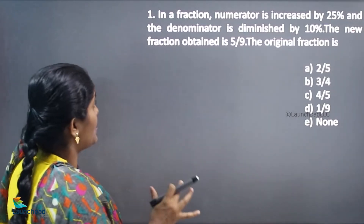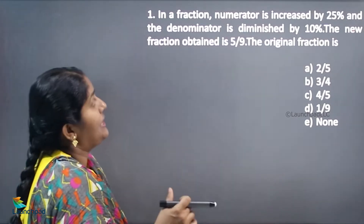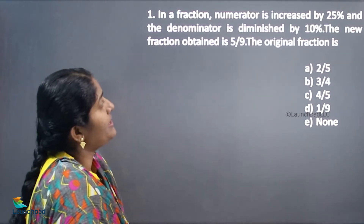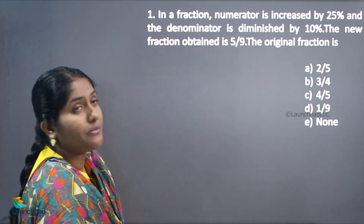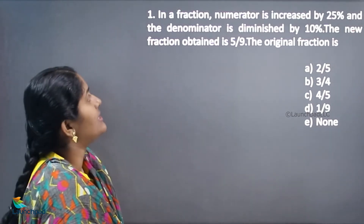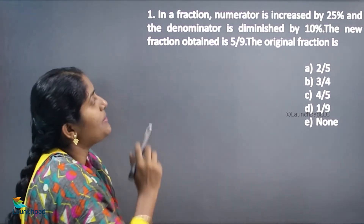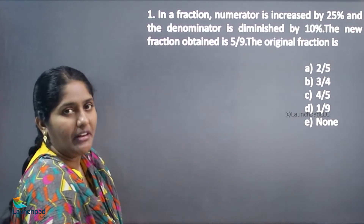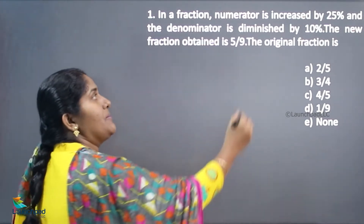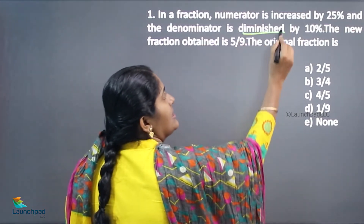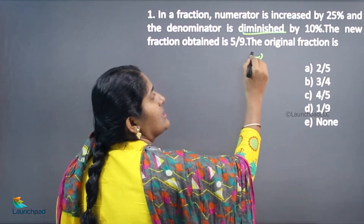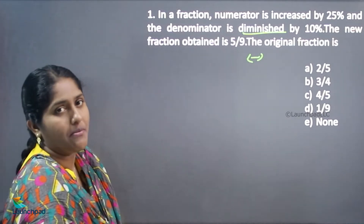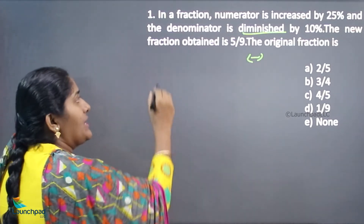The question is: in a fraction, the numerator is increased by 25% and the denominator is diminished by 10% — diminished meaning decreased. The new fraction obtained is 5 by 9.